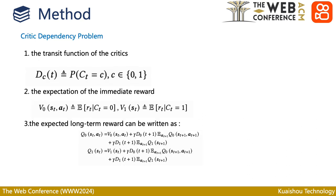The main problem is the critical dependency problem. We define the transit function of the critics like this. With this transit function, we have our immediate reward formulated as shown. Thus, the expected long-term reward can be written as this expression.